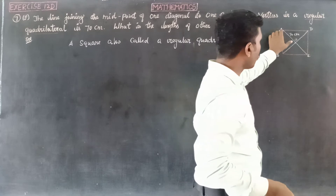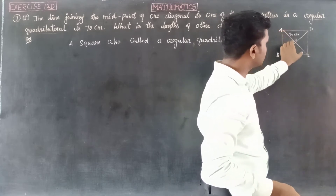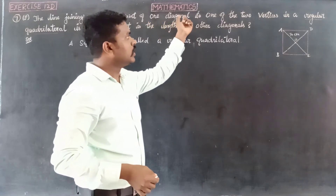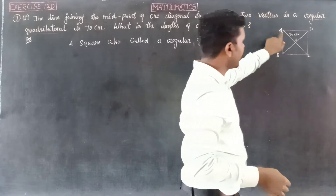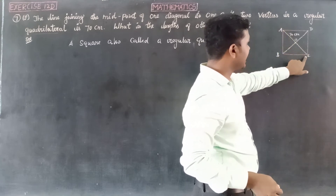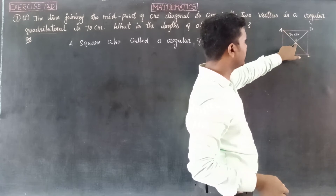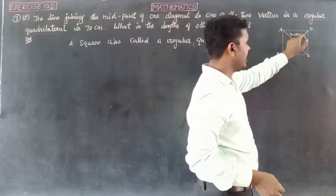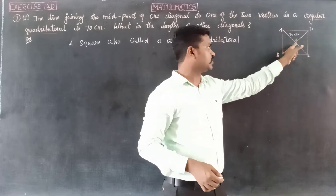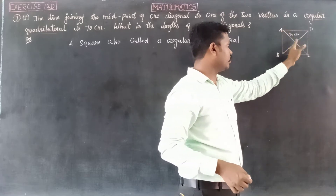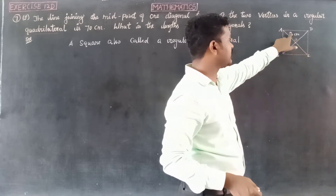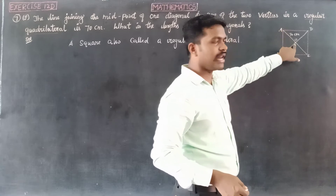The midpoint of one diagonal to another vertex — so one diagonal has vertices A and C, with midpoint O. Because the diagonals bisect each other, AO equals OC. So AO is 70 cm and OC is also 70 cm.